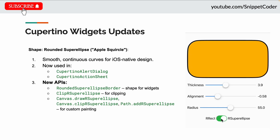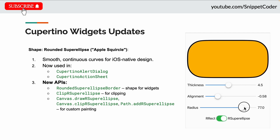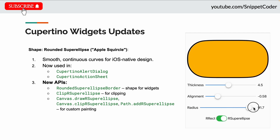Flutter introduced the Rounded Super Ellipse, also known as the Apple Squircle, bringing smoother and more natural curves for iOS native design. It's now used in the Cupertino alert dialog and the Cupertino action sheet. New APIs like RoundedSuperEllipseBorder, ClipSuperEllipse, and the canvas-based method allow us to easily apply this shape across our application.